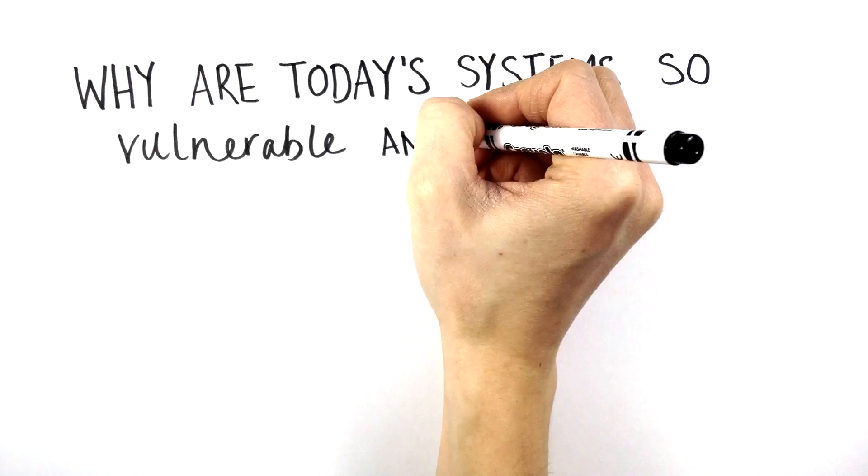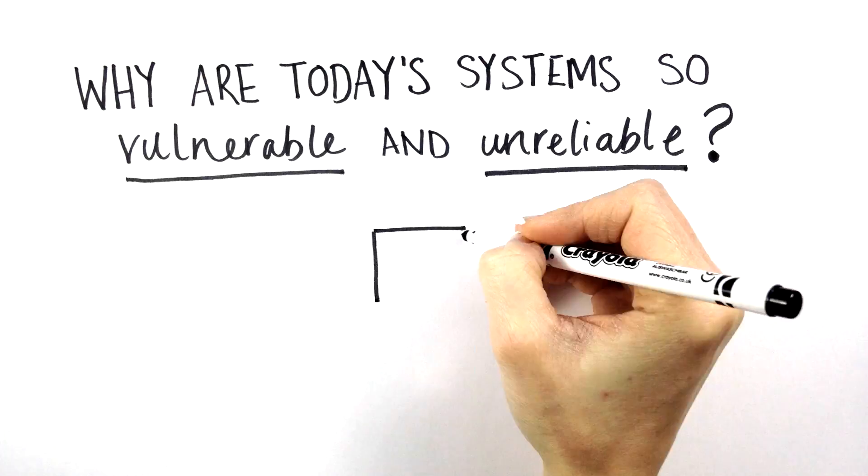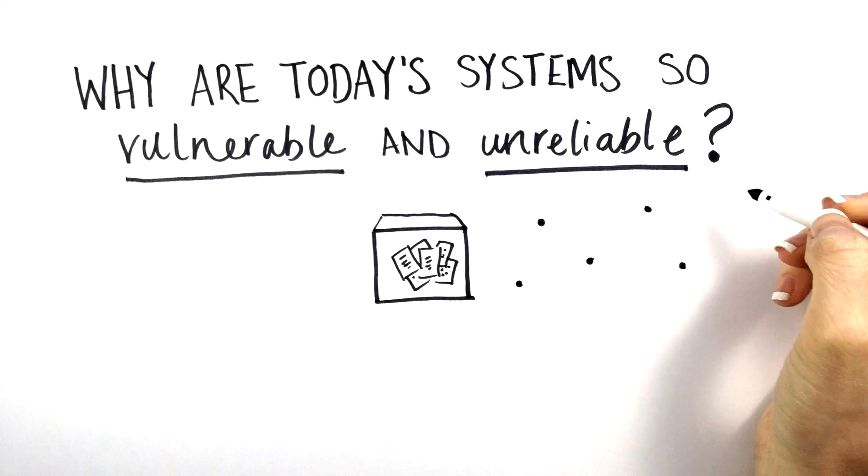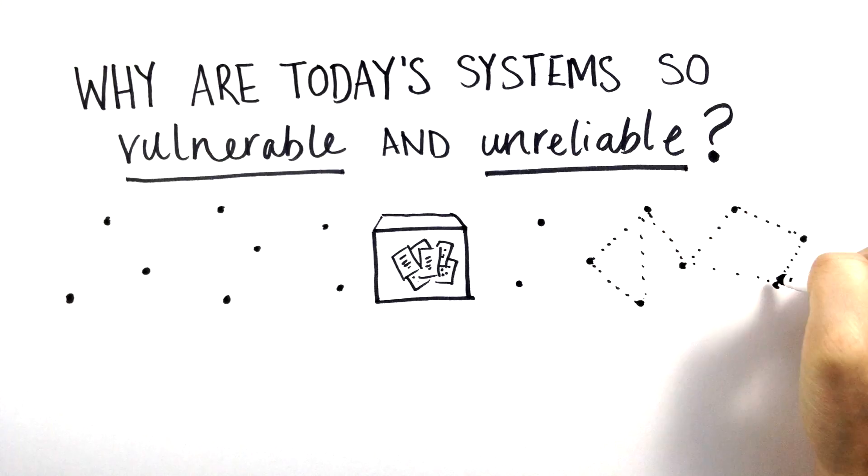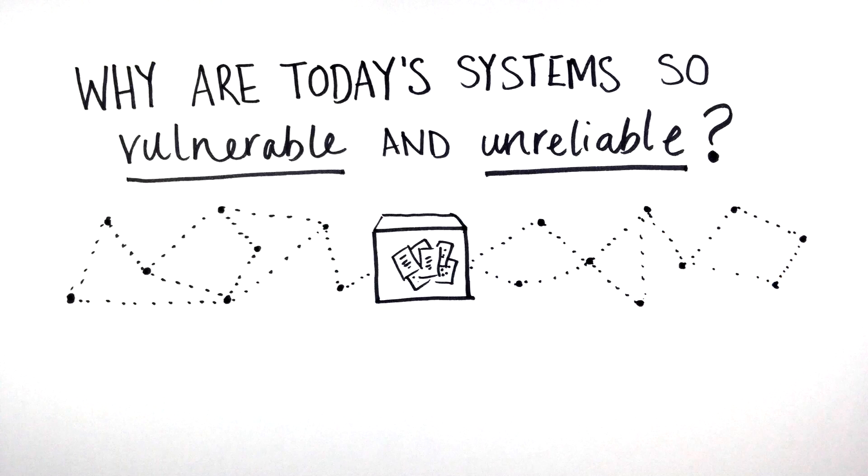Why are today's systems so vulnerable and unreliable? Because today our internet consists of servers and connected computers in which the files are normally stored in one place as complete files, readable by anyone.